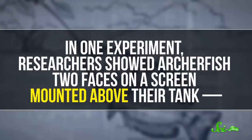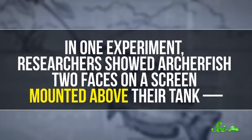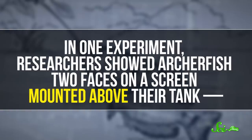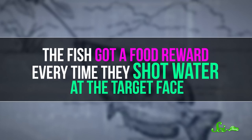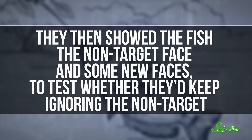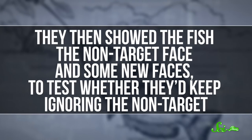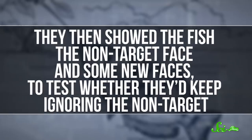Scientists have even found that archerfish seem to have some visual memory. In one experiment, researchers showed archerfish two faces on a screen mounted above their tank — one they wanted the fish to target, and one they didn't. The fish got a food reward every time they shot water at the target face. They then showed the fish the non-target face and some new faces to test whether they'd keep ignoring the non-target. Turns out they could, even if the faces were in black and white and the picture was cropped.